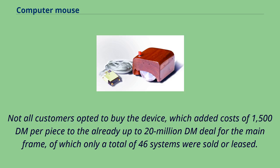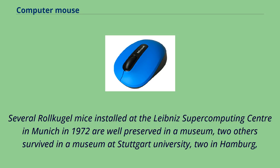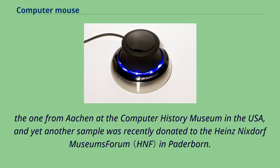Not all customers opted to buy the device, which added costs of 1,500 DM per piece to an already up-to 20-million-DM deal for the mainframe, of which only 46 systems were sold or leased. They were installed at more than 20 German universities including RWTH Aachen, Technical University Berlin, and the Universities of Stuttgart and Konstanz. Several Rollkugel mice installed at the Leibniz Supercomputing Center in Munich in 1972 are well preserved in a museum, with others surviving in museums at Stuttgart University, Hamburg, the Computer History Museum in the USA, and the Heinz-Nixdorf Museum's Forum in Paderborn.